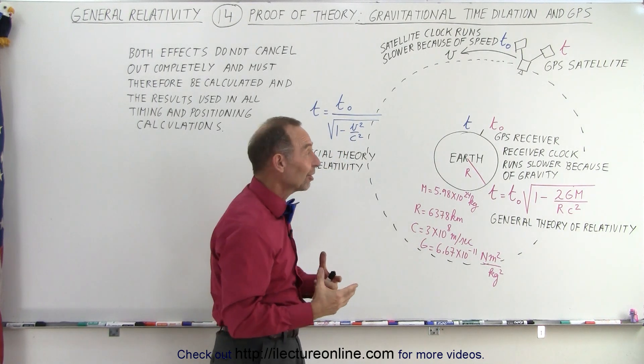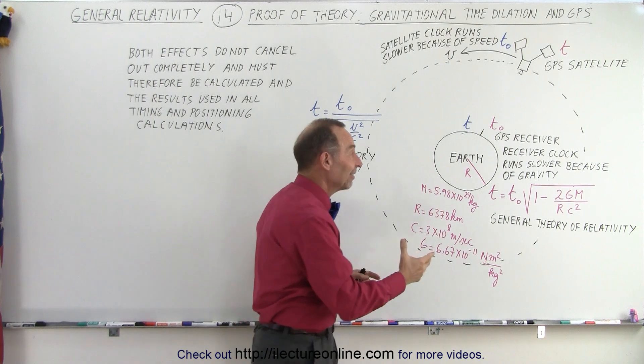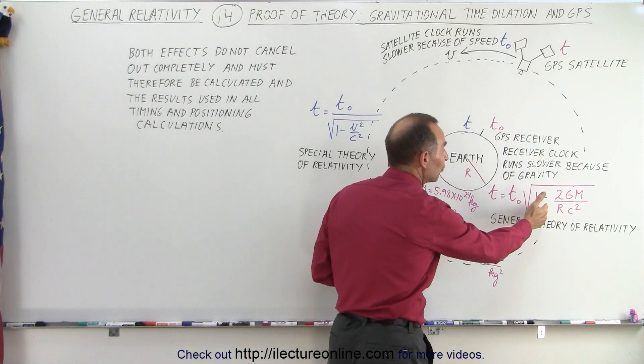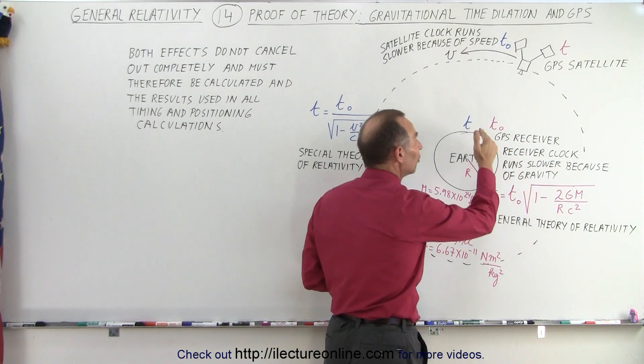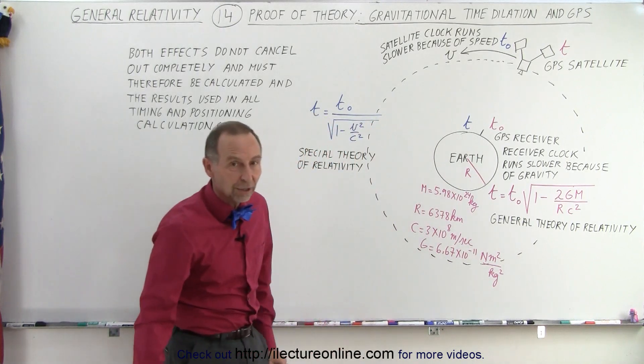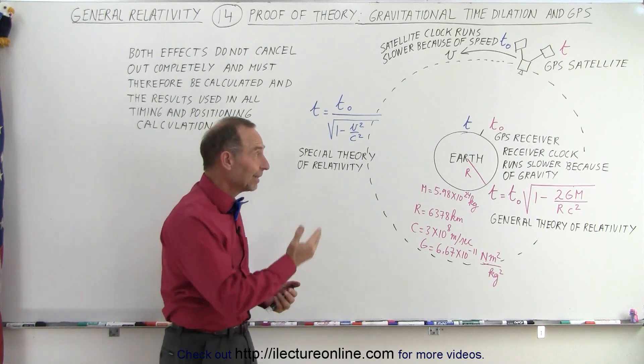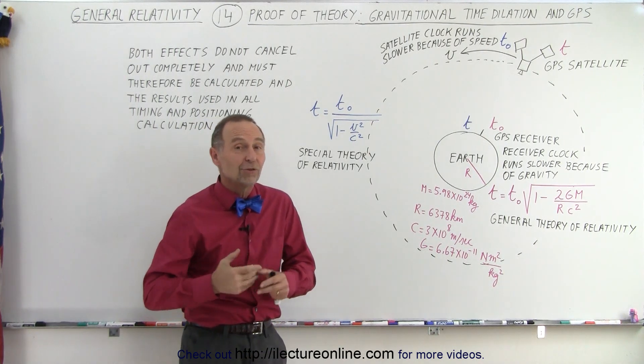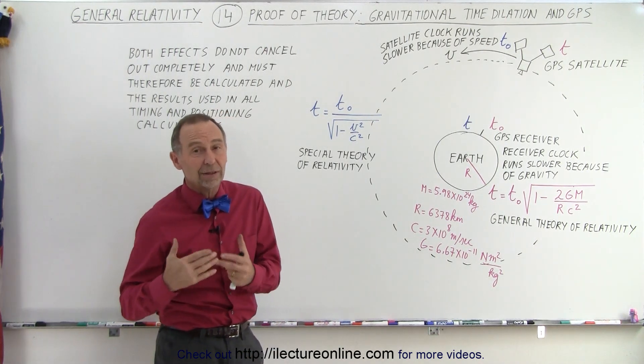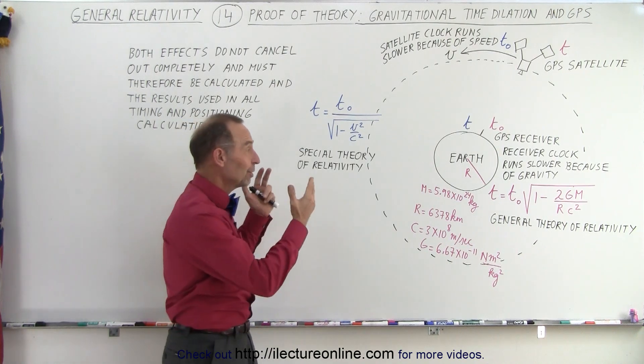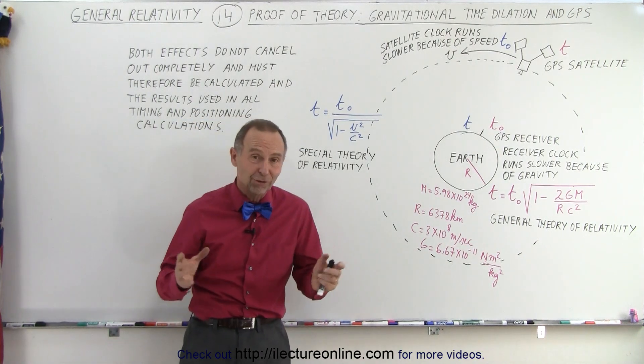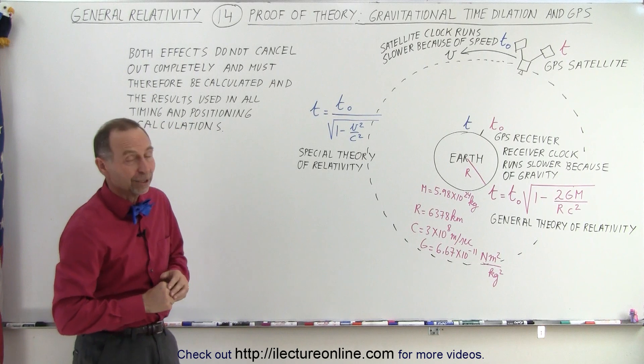We need to make the adjustment. The adjustments are necessary because, again, we've proven that these equations are required to make the GPS work. Without it, it wouldn't work. With it, it works. It just shows again, it proves again that the general theory of relativity, just like the special theory of relativity, is real and must be adjusted for. Otherwise, our GPS would not work appropriately.